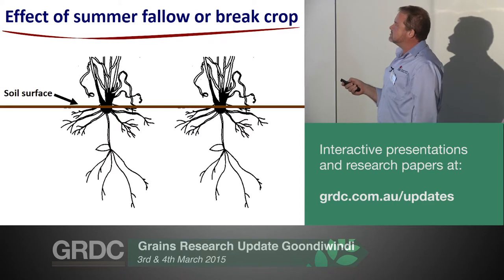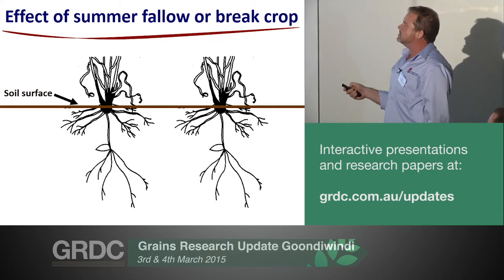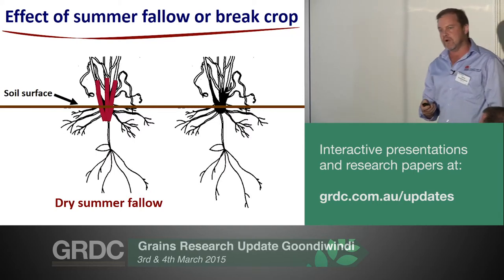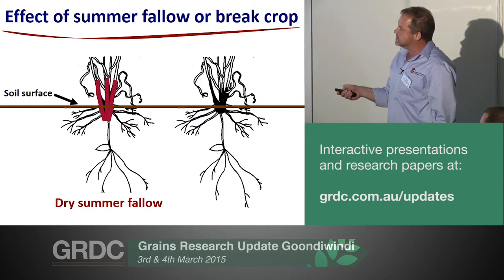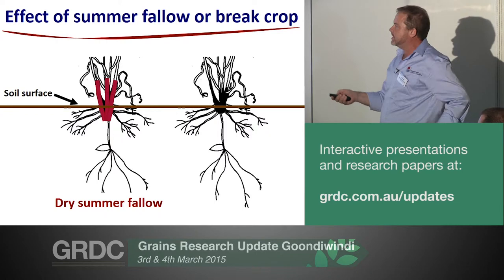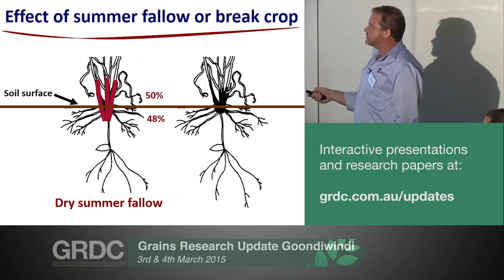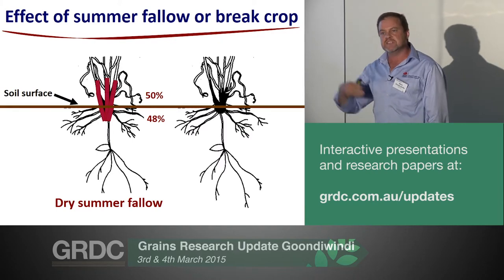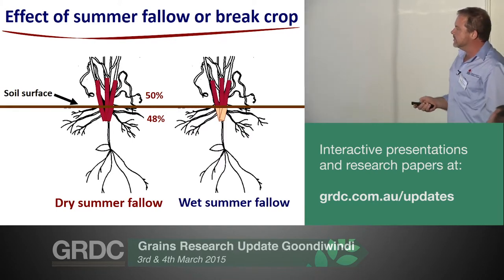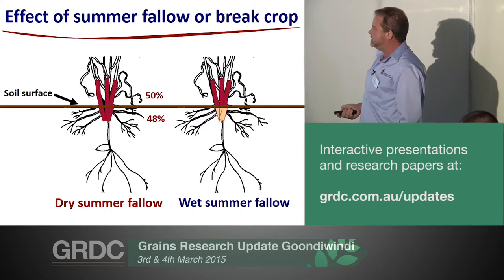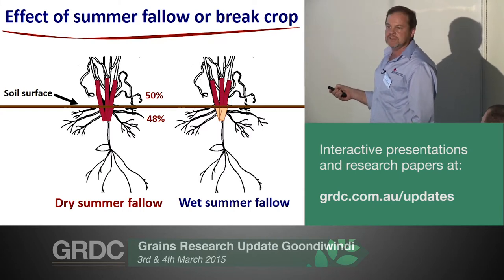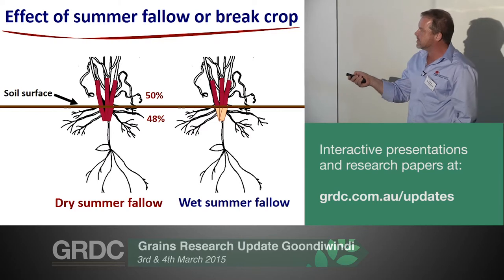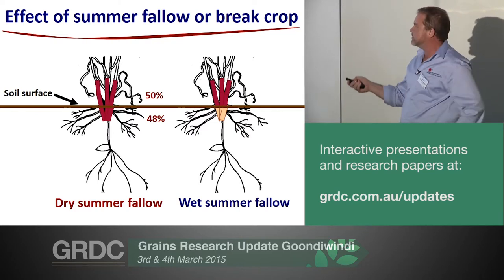Why does this happen? It comes back to what happens over a summer fallow or break crop fallow period. If we have a dry summer, the crown rot fungus remains concentrated in the crown and base of the stem. With a dry summer fallow, we get pretty similar recovery — if 50% of above-ground stubble has the fungus, we'll get a similar number below ground in the crown because there's been no decomposition. But in a wet summer — and this is a real number from near Tamworth — we get decomposition of the crown tissue. Below ground stays wetter longer, with more microbial activity, and the crown becomes a carbon source that other organisms feed on, displacing the crown rot fungus.